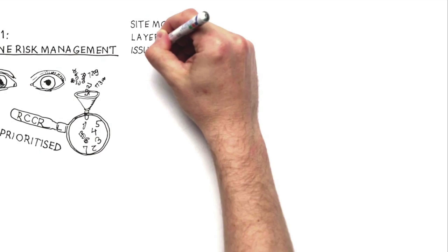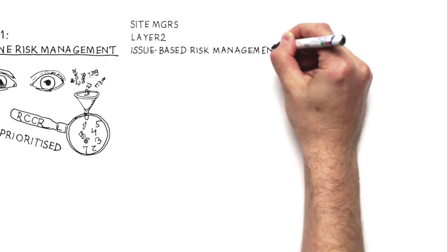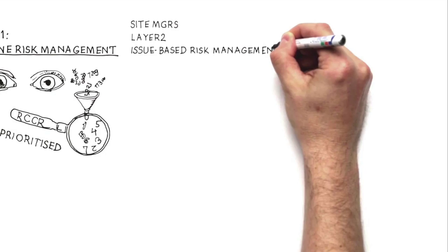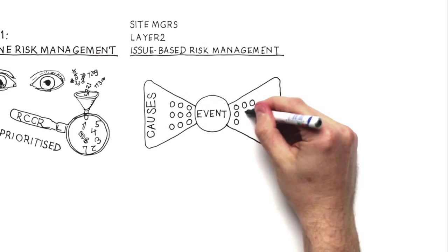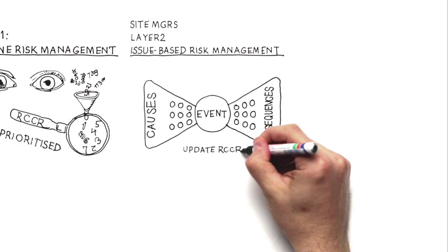You use bow-tie analysis to organize the required controls that need to be put in place. Now you've got your controls in view, in particular the critical controls, what do you do with them? You update the site's risk and critical control register to make sure it reflects the critical controls that need to be in place to address the priority unwanted events.